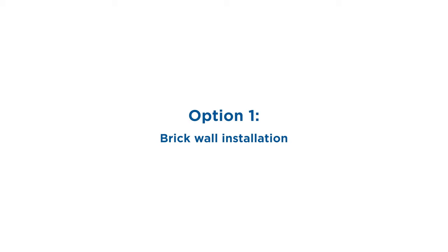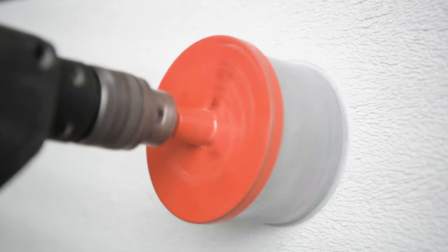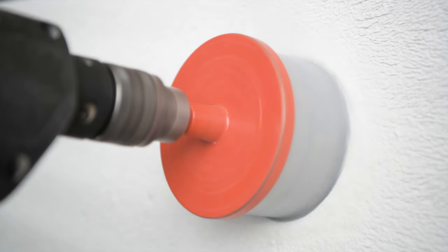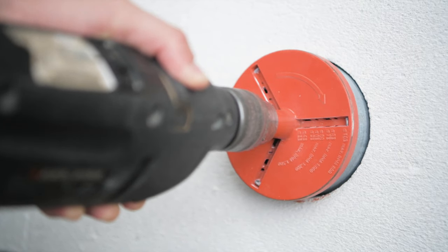Alright, so the more common option is to install it into a brick wall. The first step is to cut out a circular hole 103 millimeters wide and at least 50 millimeters deep.